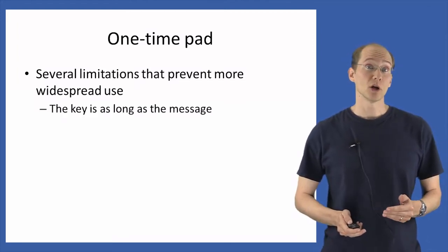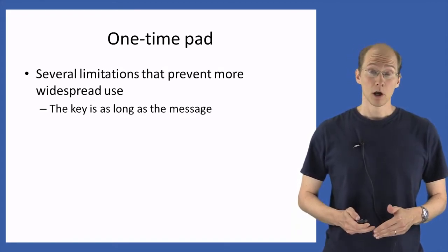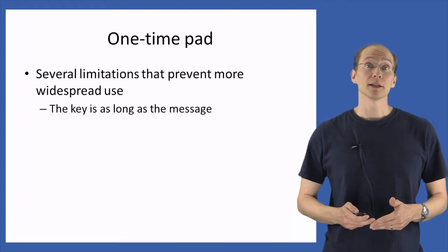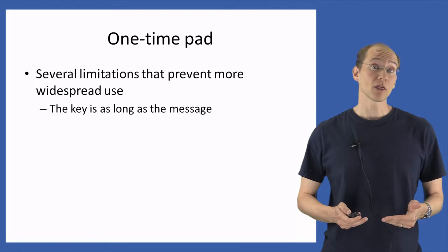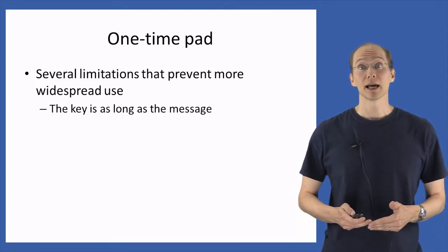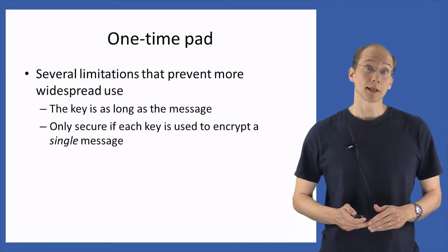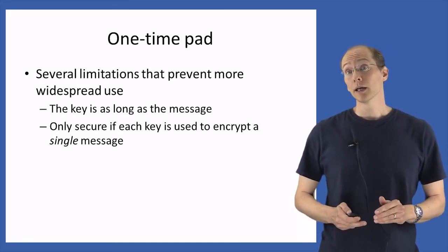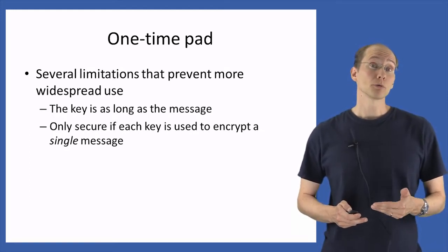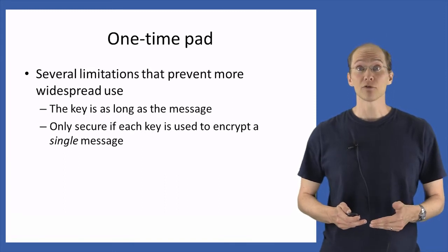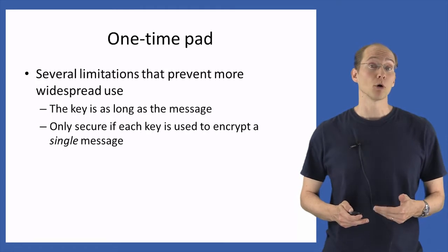One of these limitations, which you may have noticed as we described the scheme, is that the key is as long as the message. In the description of the one-time pad, we had a parameter n that determined both the length of the messages that could be encrypted as well as the length of the key. Moreover, the one-time pad is only secure if each key is used to encrypt a single message. The proof of perfect secrecy we gave relied on the assumption that the key was being used to encrypt only a single message.